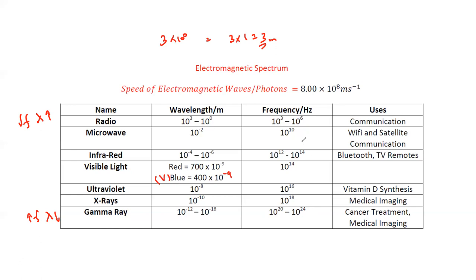Applications: radio waves are used for land communication; microwaves are used for satellite and Wi-Fi communication; infrared is used in Bluetooth and remote controls; visible light is used for observation; ultraviolet is used for sterilisation, killing bacteria, and vitamin D synthesis; X-rays are used in medical imaging and finding bone cracks; gamma rays are used in cancer treatment and radiotherapy.